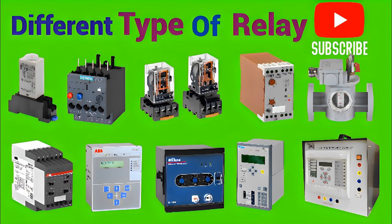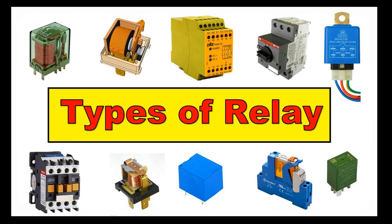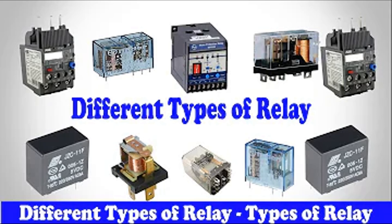Disadvantages: Higher cost — typically more expensive than electromagnetic relays. Limited overload capacity — SSRs are less tolerant of overloads or surge currents than electromagnetic relays. Heat dissipation — at high currents, they produce heat, requiring heat dissipation solutions. Applications: Industrial automation — for controlling motors, conveyor belts, and robotic systems where fast switching is required. Heating systems — used in HVAC and other heating applications for precise temperature control. Lighting control — ideal for dimming and switching lighting systems quickly and efficiently.